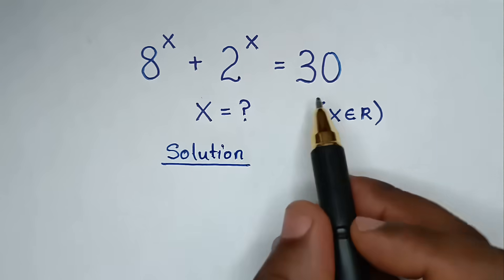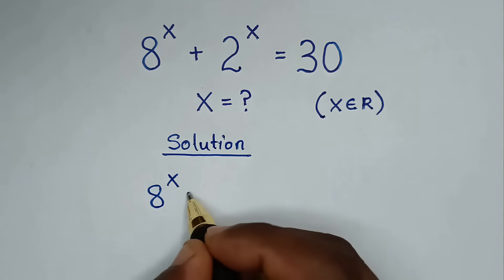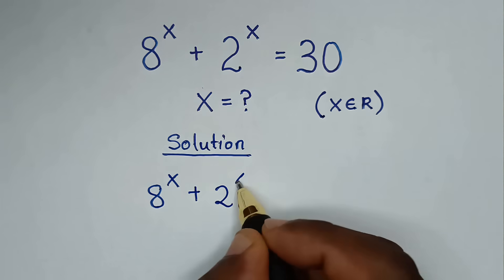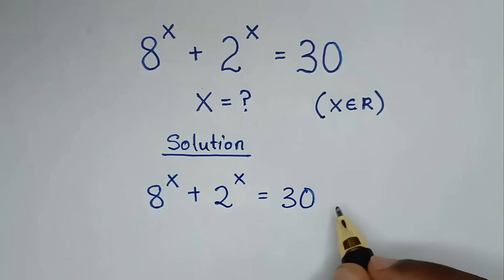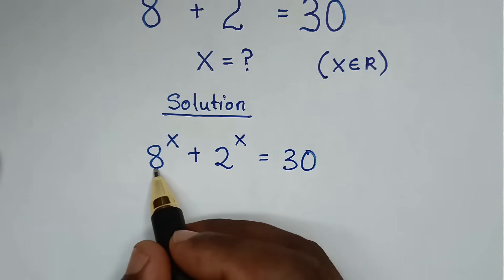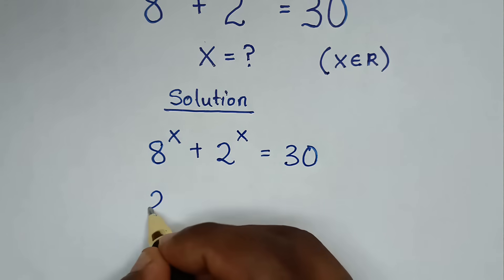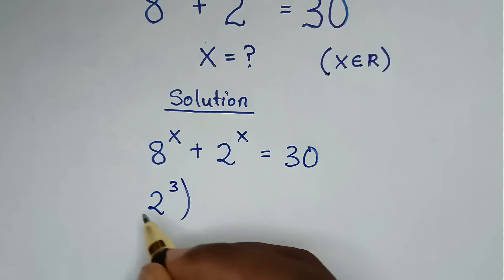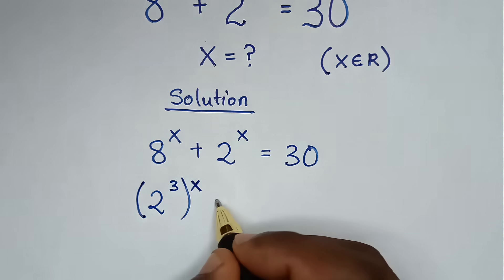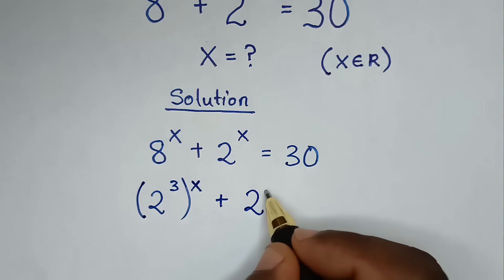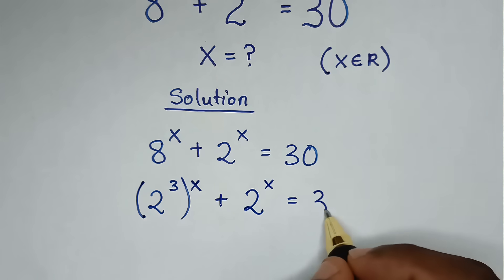From this problem, which is 8^x + 2^x = 30, we decompose 8 into prime numbers: 8 is the same as 2³. Then we rewrite it as (2³)^x + 2^x = 30.